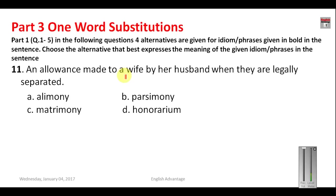Now Part 3 is one-word substitution. Question 11: 'An allowance made to a wife by her husband when they are legally separated.' 'Parsimony' means a person who hates spending money, 'honorarium' is done in honor of somebody, and 'matrimony' means marriage. The correct answer is 'alimony.' This is a very important question of the type asked in the real exam.